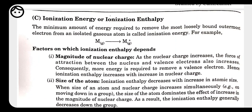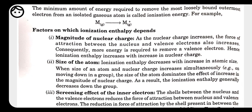Certain factors affect ionization enthalpy. First is nuclear charge: as the attraction force towards the nucleus increases, it becomes more difficult to remove an electron, so ionization enthalpy is greater. Second is size of atom: if the size of an atom is small, removal of electron is difficult because attraction towards the nucleus is stronger. As size increases, ionization enthalpy decreases; it is inversely proportional to atomic size.